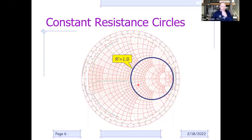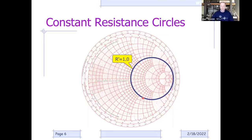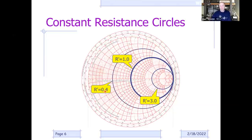On the Smith chart is a bunch of circles. These circles are all tangent at the open circuit point and get larger and larger—those represent constant resistance: the R portion of R plus jX. The circle that cuts right through the center represents a normalized resistance of 1.0—in our case, 50 ohms. So 50 plus j0 is at the center, normalized resistance 3.0 would be 150 ohms, and 0.4 would be 20 ohms.